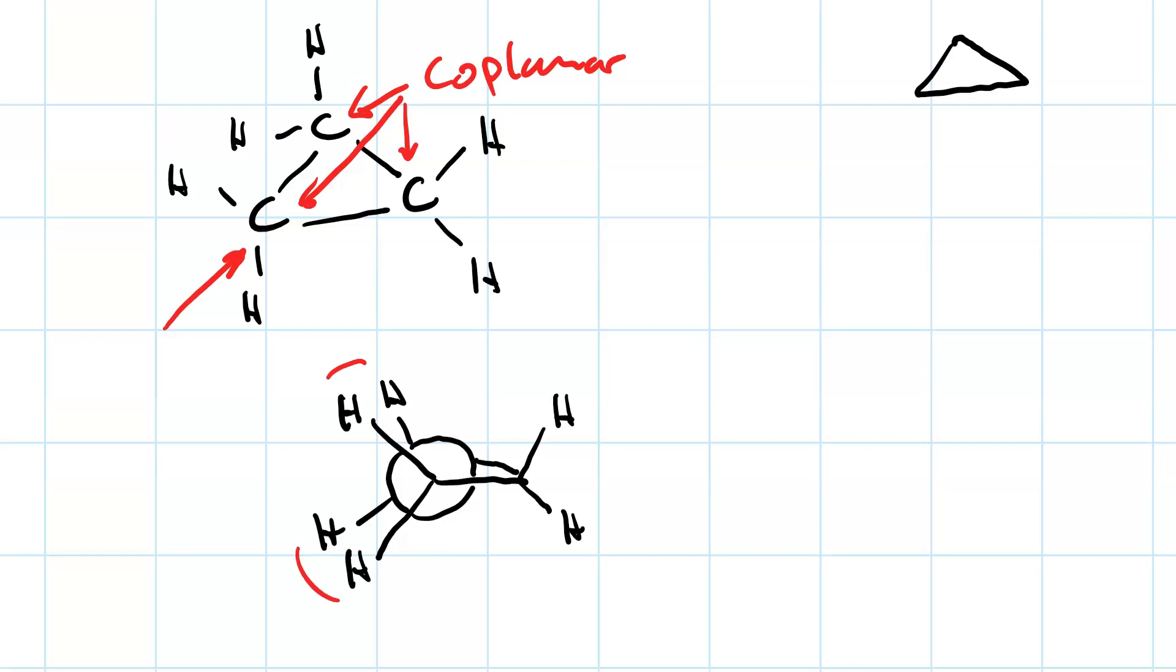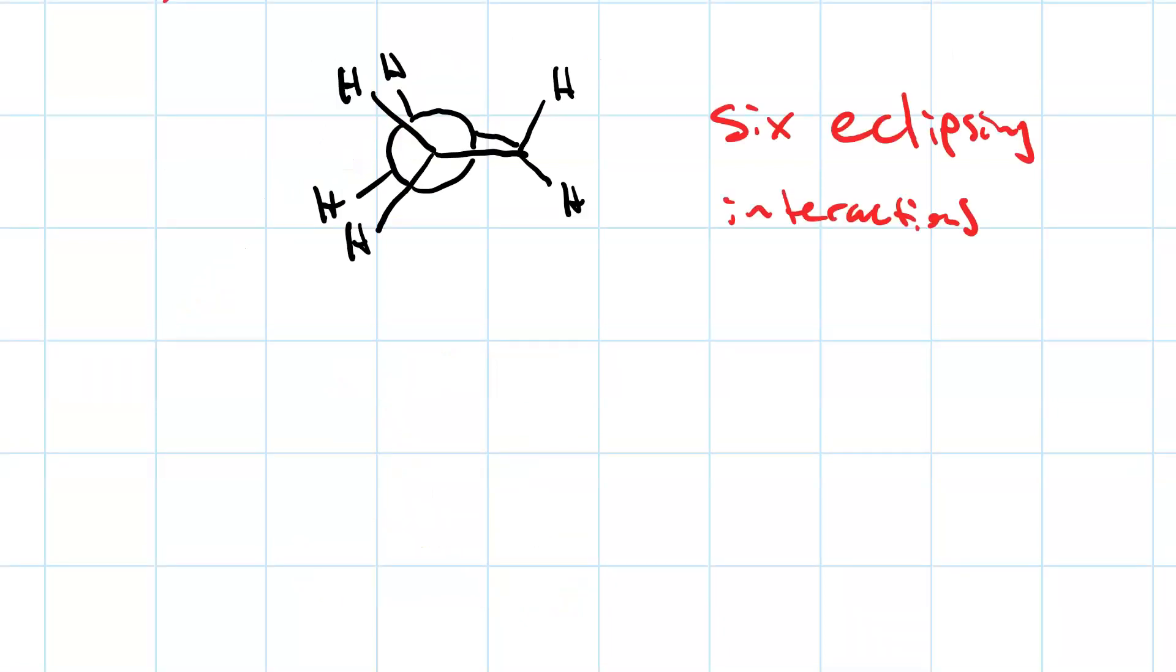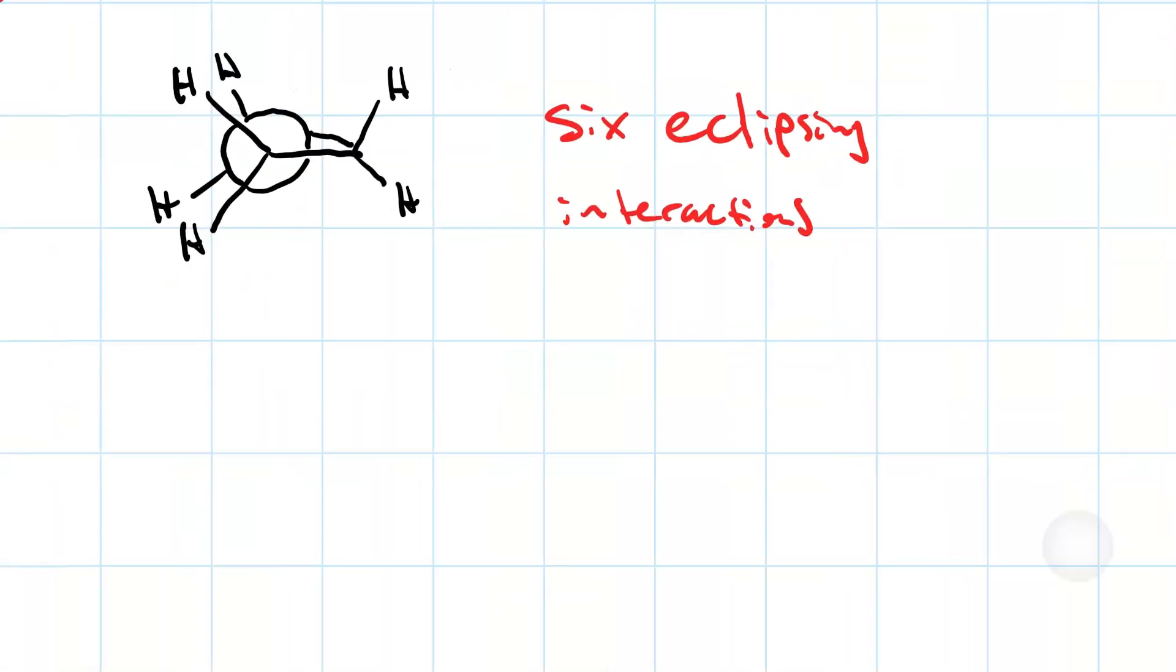In fact, there are six eclipsing interactions, because this pair is also eclipsed, as is this pair, and this pair, and this pair. Those eclipsing interactions make cyclopropane unstable, and we refer to that as torsional strain.